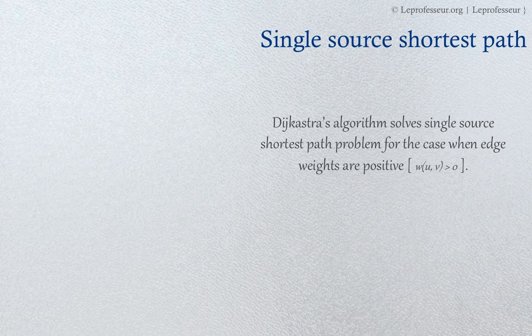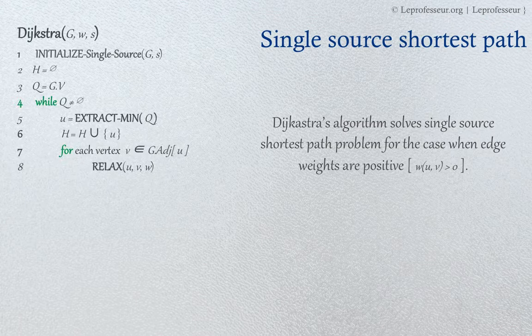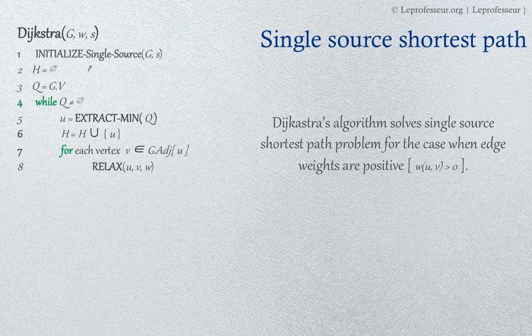Dijkstra's algorithm solves this problem when the weights on the edges are positive, greater than zero, while Bellman-Ford's algorithm can be applied when the weights are negative. Now let's see the steps this algorithm takes. As you can see here, our first step is initialize.